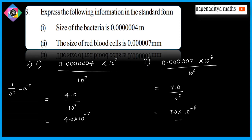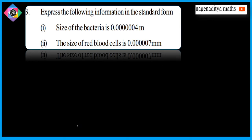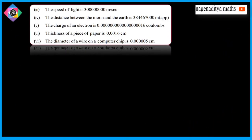The speed of light is 30 crores per second. We will now show the speed of light in standard form. The standard form gives the primary value. So, third one.